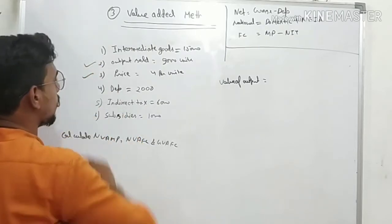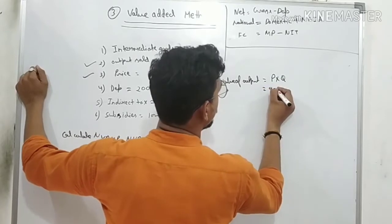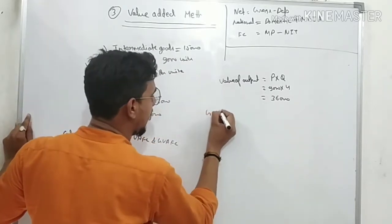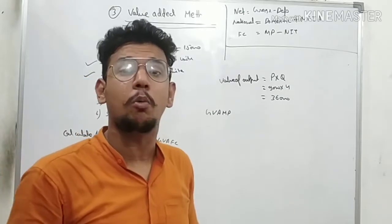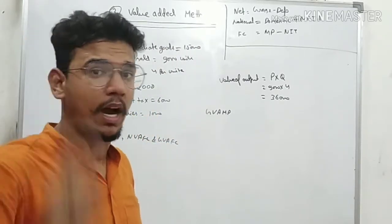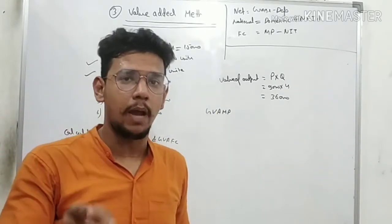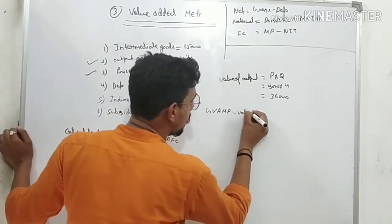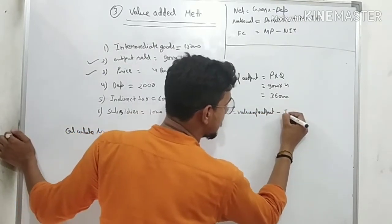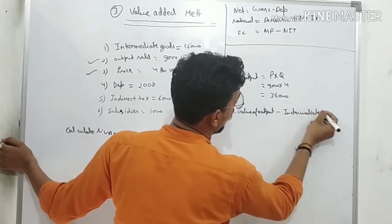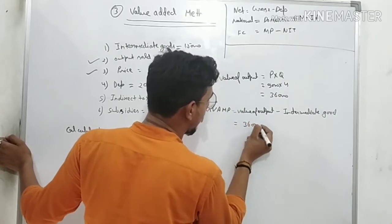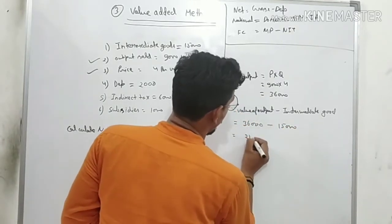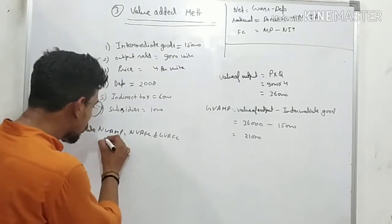Here, sales are not given but price is given. After calculating Value of Output, find GVAMP. Remember: GVAMP is also known as GDPMP. Formula: Value of Output minus Intermediate Goods. Value of Output comes to 36,000; Intermediate Goods given is 15,000. So GVAMP = 36,000 − 15,000 = 21,000.